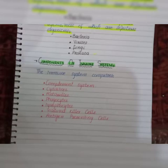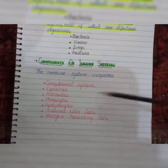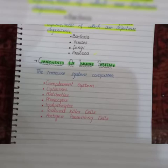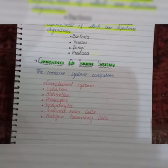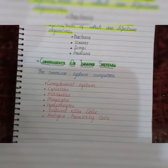Next we have antibodies. These are also proteins in nature, and in our body we have five main types of antibodies: IgG, IgA, IgM, IgD, and IgE. Antibodies are produced in response to a stimulus. Next we have phagocytes.